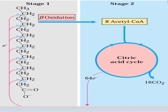As a brief summary — acknowledging Lehninger Biochemistry Chapter 17 — in stage one of beta oxidation, two carbons are released at each step. Over seven total cycles, eight molecules of acetyl-CoA are produced. In stage two, these eight acetyl-CoA enter the citric acid cycle, producing 16 CO2 and 64 electrons, resulting in energy production.